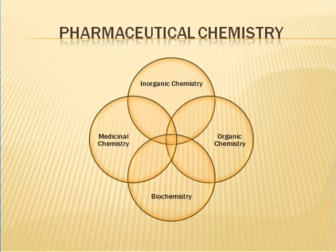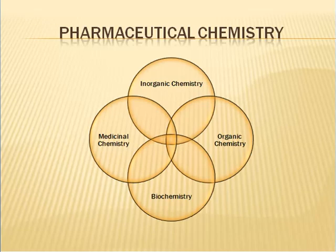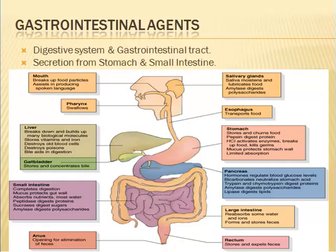Now we will discuss about inorganic pharmaceutical chemistry. Inorganic pharmaceutical chemistry is a science that makes use of the laws of chemistry to study inorganic substances as drugs — that is, their preparation, chemical nature, composition, structure, influence on an organism, and so on.